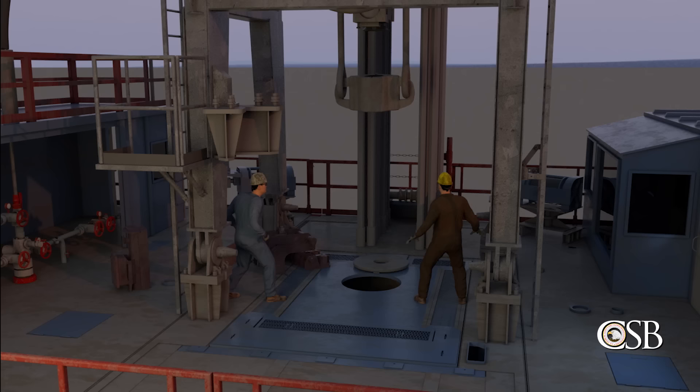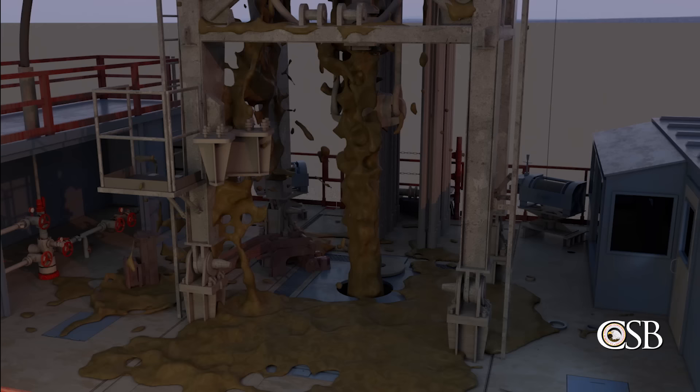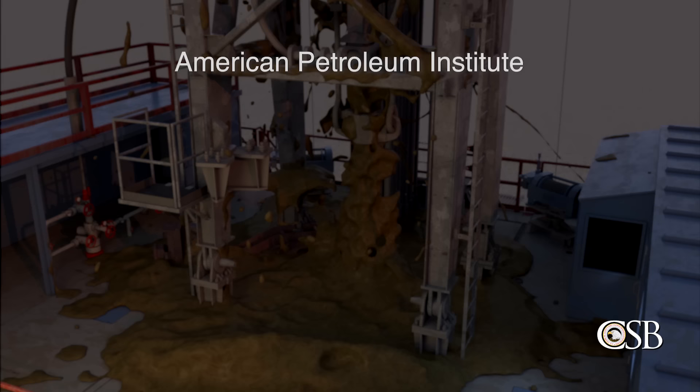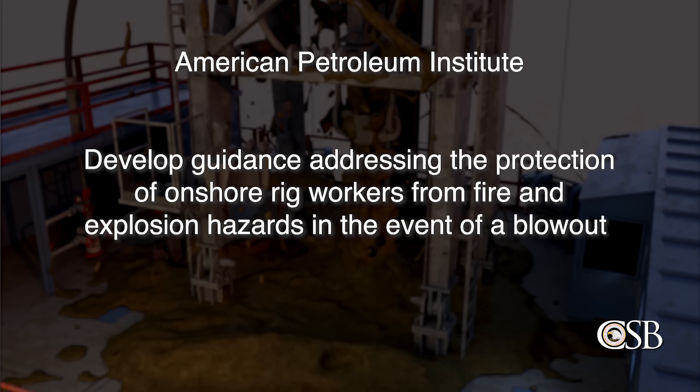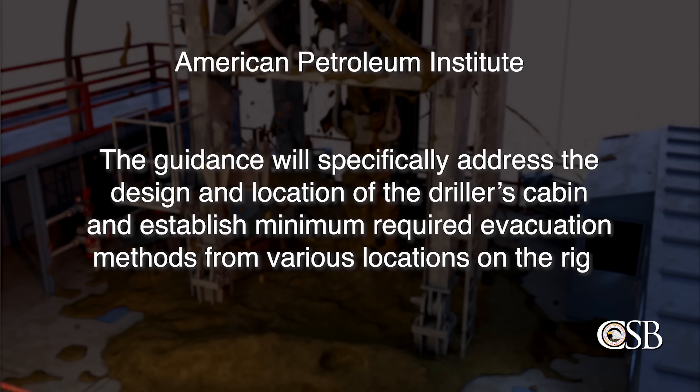Although there are best practices within the chemical industry for the location and design of control rooms, there is no guidance specific to drilling. As a result, the CSB made a recommendation to the American Petroleum Institute to develop guidance addressing the protection of onshore rig workers from fire and explosion hazards in the event of a blowout. The guidance will specifically address the design and location of the driller's cabin and establish minimum required evacuation methods from various locations on the rig.